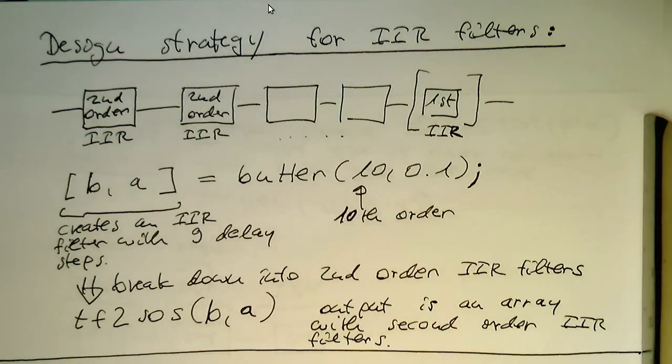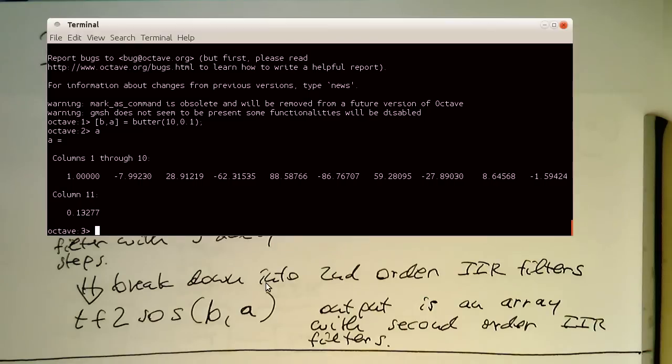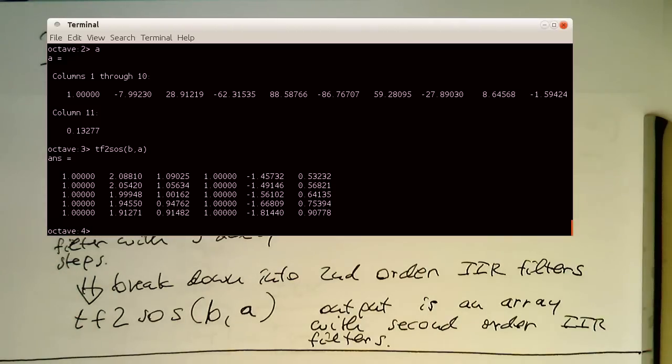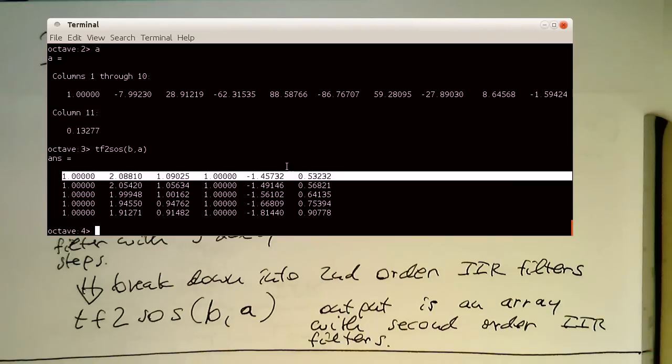Let's just have a look how this works. The problem is that it's a bit cumbersome, the output. So if we write TF2SOS and B, A, then the output is the following here, and the way it is meant here, that these first three here. So that's the first second order filter, that's the second second order filter, and the third one and so on. So every row is one second order filter.